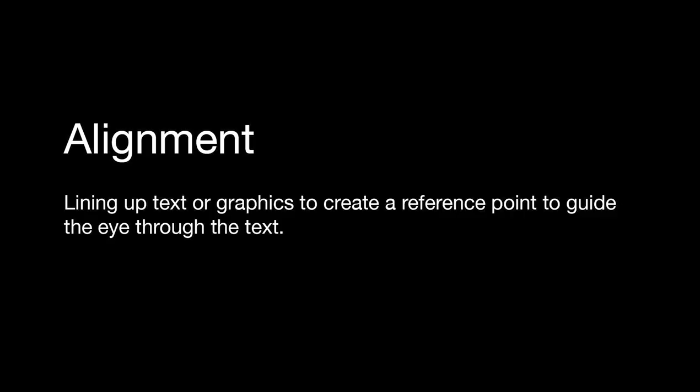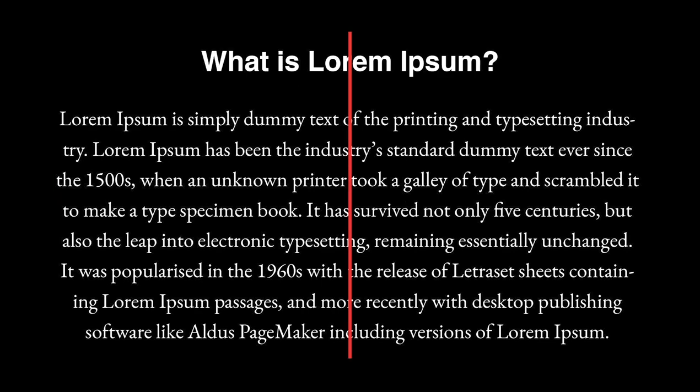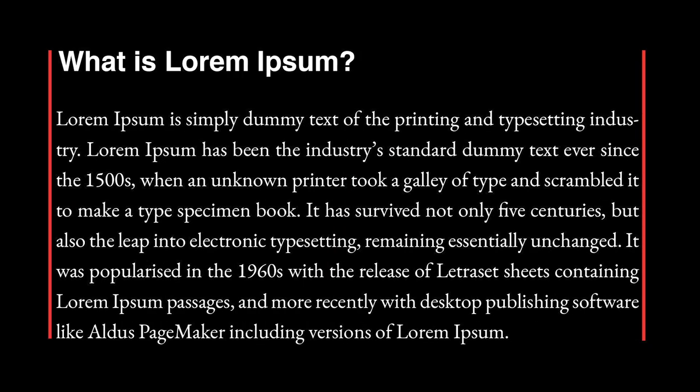Alignment is a term commonly used in graphic design. This is lining up text or graphics to create a reference point to guide the eye through the content. Alignment is commonly discussed in typography — there's right aligned, center aligned, left aligned, and justified when both sides of the text line up. It can also refer to any element including graphics and how they work together to be straight, creating a connection between different elements.